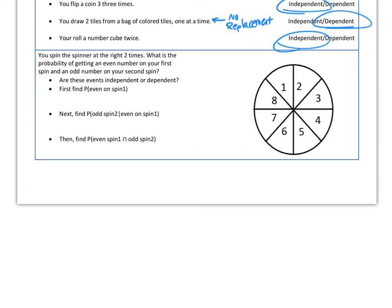What about spinning a spinner? Does one spin affect another? Nope, because just like we said before, the size of the sections on the spinner stay the same. So these are independent events. And since they're independent events, we can just multiply each probability together to get the compound probability.